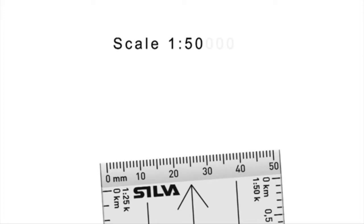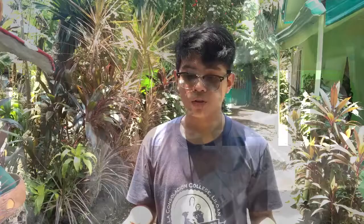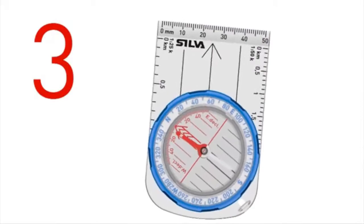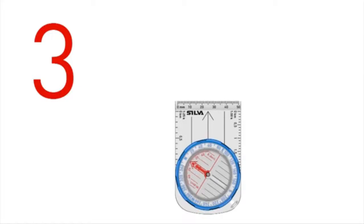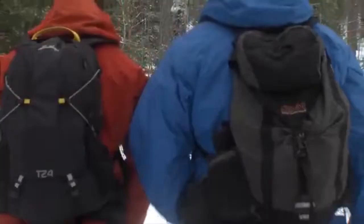To use a compass to navigate and move towards your destination, hold your compass and ensure that the direction of travel arrow is aimed away from you. Still holding the compass, move your body until the magnetized needle lines up with the orienteering arrow. By doing this, the direction of travel arrow will now be facing the bearing from your map.